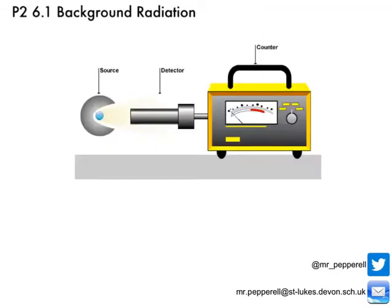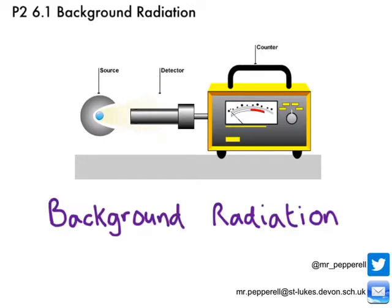This is a Geiger counter used in scientific research and industry. What it does is emit a distinctive click whenever it's put near a radioactive source — radioactive particles from the source are detected and the counter gives a little click. The more clicks you hear, the more particles are being detected. You might also notice that a click is given out even when there's no source nearby, because of something called background radiation. This radiation can be from a number of sources, both natural and man-made.